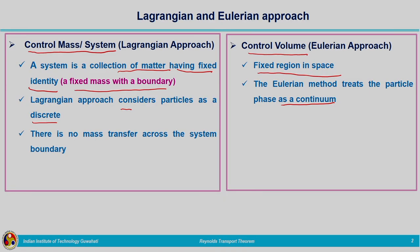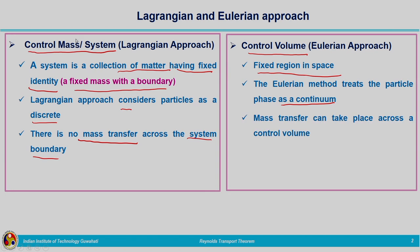The mass of the fluid matter considered is not going to change in the case of the Lagrangian approach. But in the Eulerian approach, we fix a frame of reference and whatever comes inside — and some amount will be leaving outside that frame of reference — we are interested in the fluid matter within the frame of reference. So the mass will be changing. There is no mass transfer across the system boundary in the Lagrangian approach, but in the case of a control volume, mass transfer can take place across the control volume.